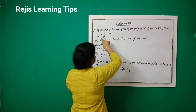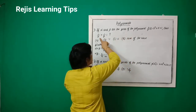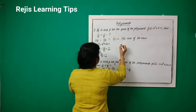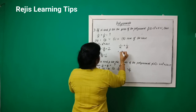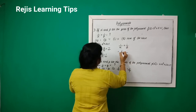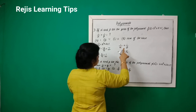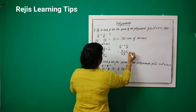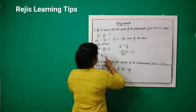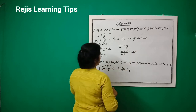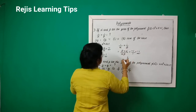Now we are going to find 1/α + 1/β. If alpha and beta are the zeros of the polynomial, then 1/α + 1/β equals (β + α)/(α·β). Beta plus alpha equals -1, divided by alpha·beta which equals 1, so -1/1 = -1. So our answer is option B.